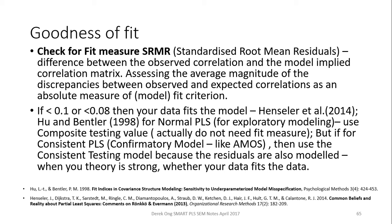The first one is the standardized root mean residual (SRMR), which is the difference between the observed correlation and the model-implied correlation matrix. This is the average magnitude of the discrepancies between the observed and expected correlation as an absolute measure of fit criteria — how well does your data actually fit the model. The cutoff point is 0.1, or in more conservative cases, 0.08.